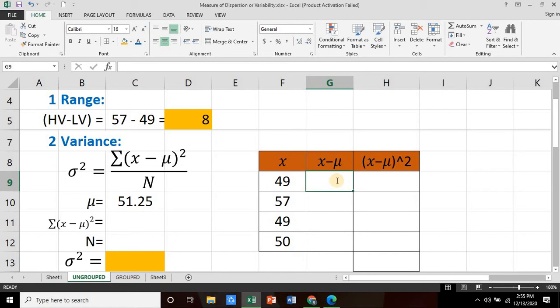So we'll be using this value for μ. We now compute for the second column. This is equal to our x value minus our mean, 51.25. Press enter and we have negative 2.25. Now we simply place the dollar sign for the value for μ to keep it on the same value before we drag our formula. So there you go. 57 minus 51.25 is 5.75 and 49 minus 51.25 is the same as negative 2.25 and 50 minus 51.25 is negative 1.25.